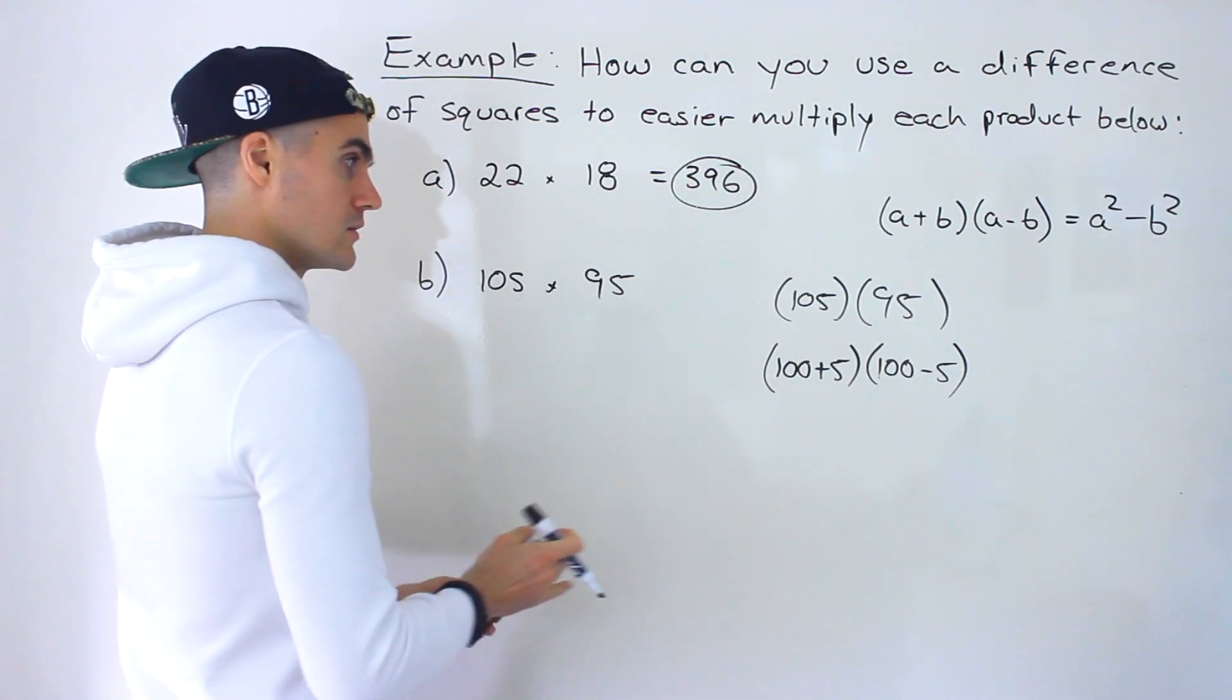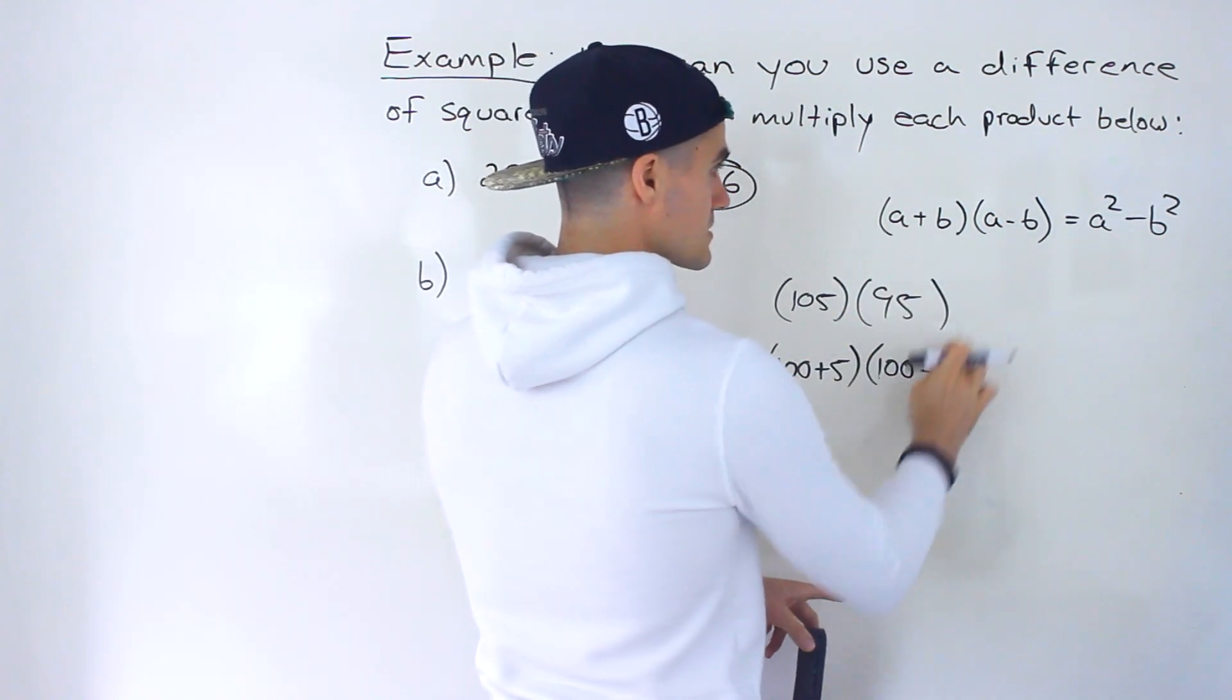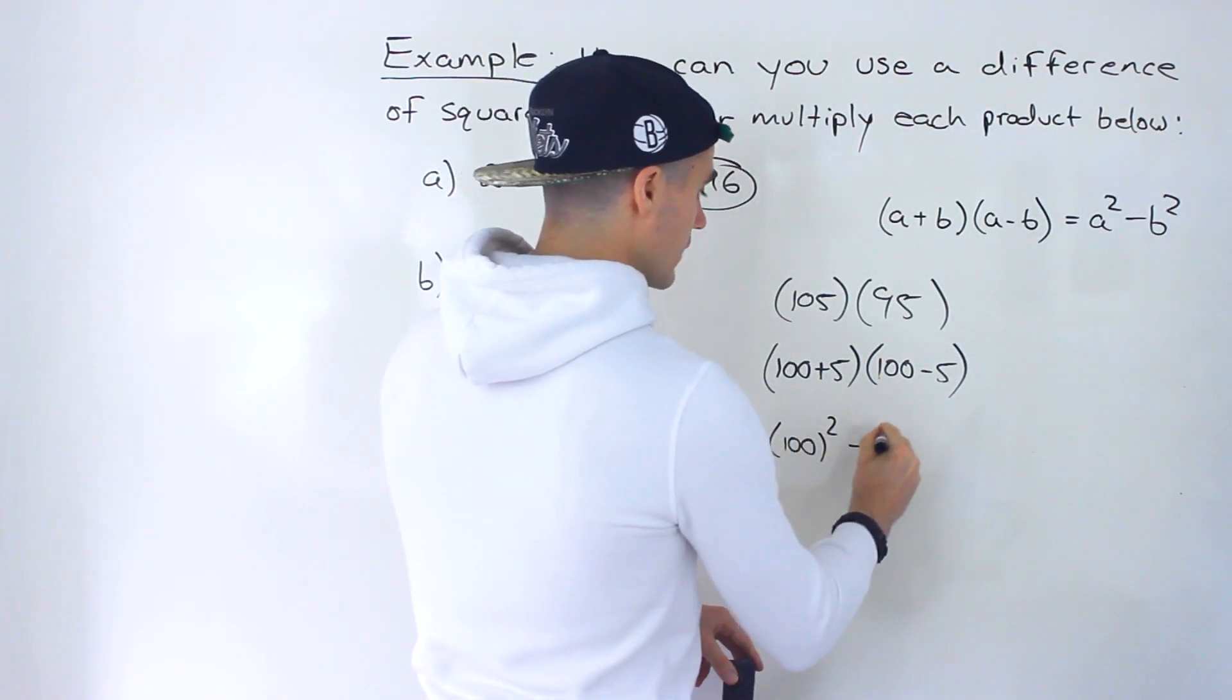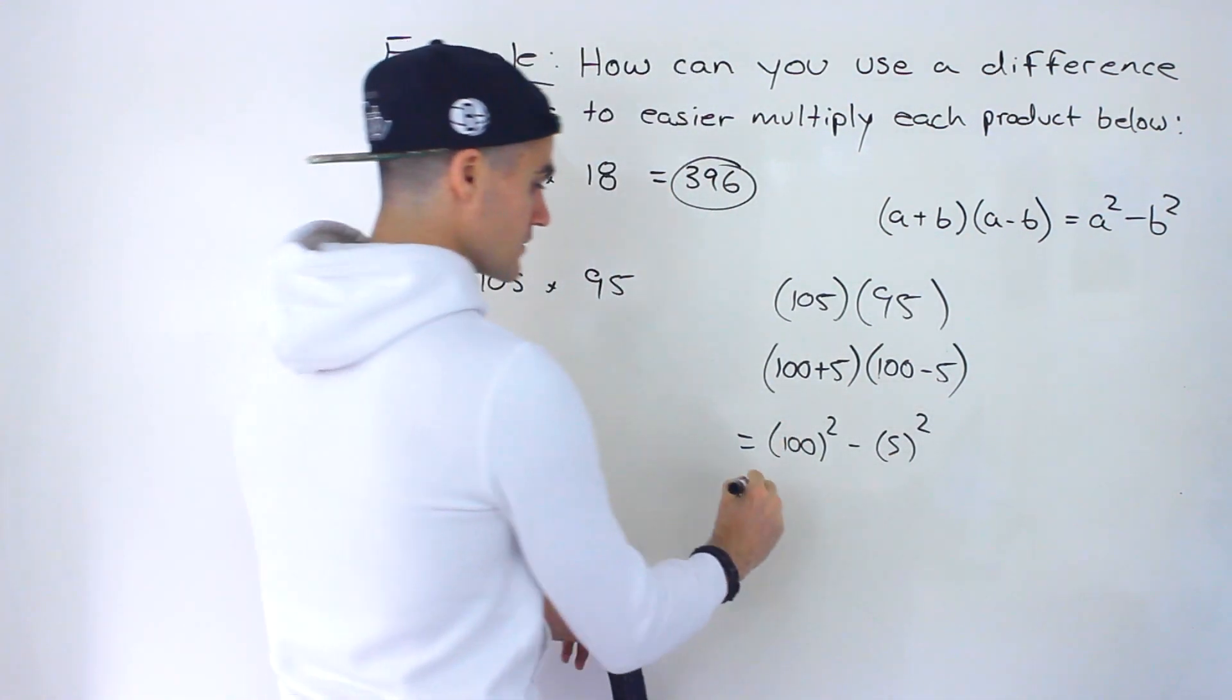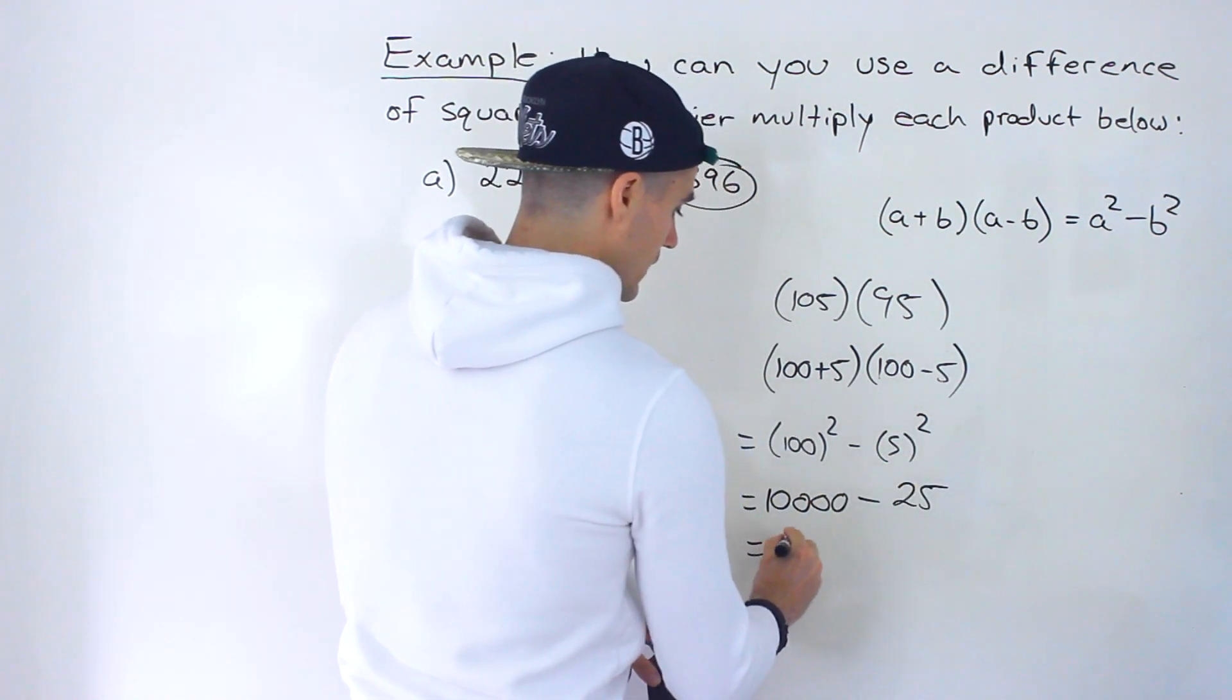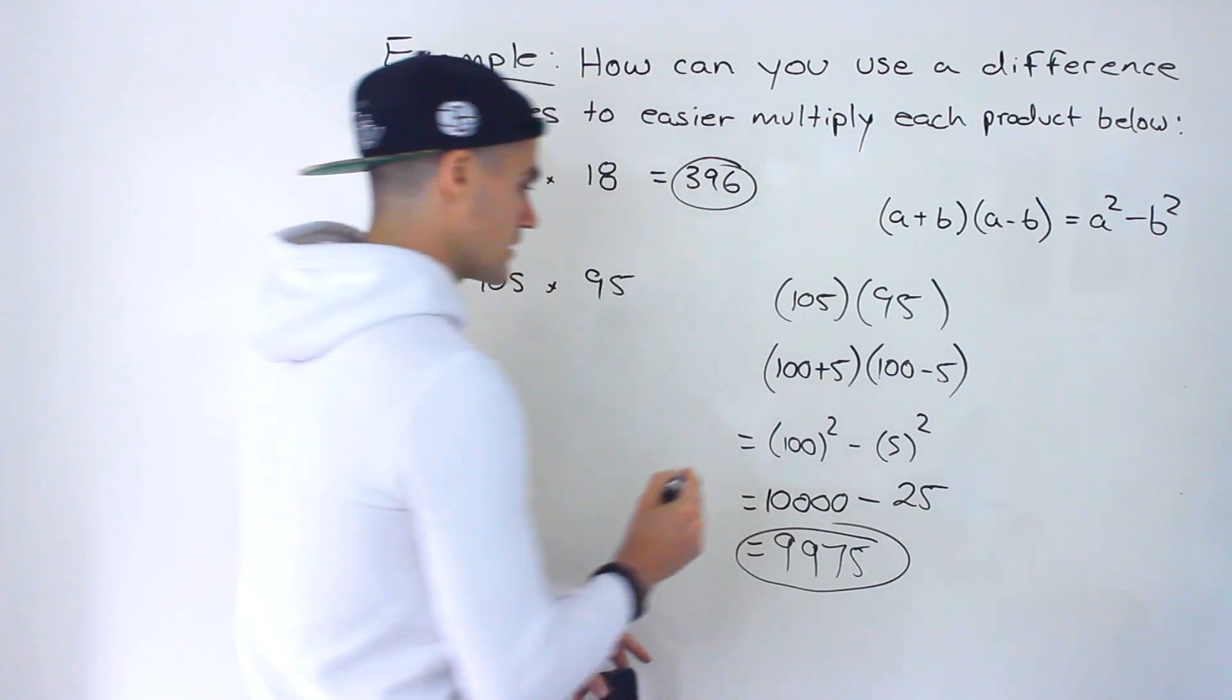And then from here this is in this format, that a is a hundred and then the b is five. So using that formula we could rewrite this as a hundred squared minus five squared. A hundred times a hundred would give us ten thousand. Minus five to the power two is twenty-five. So we end up with nine thousand nine hundred and seventy-five. That ends up being the answer.